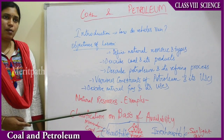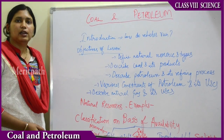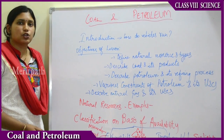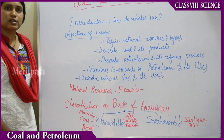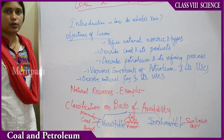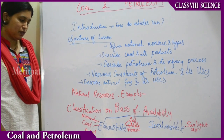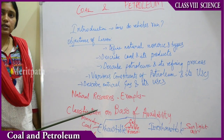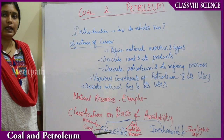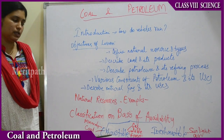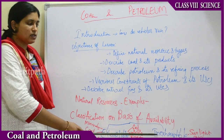When we talk about natural resources — natural means anything freely available in nature around us. Examples of natural resources include coal, natural gas, petroleum, and coal tar. Natural resources are classified on the basis of availability in nature. They are of two types: exhaustible and inexhaustible.